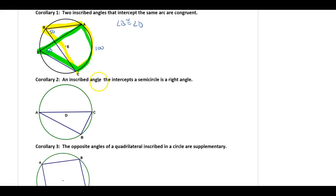Anytime an inscribed angle intercepts a semicircle, meaning the endpoints of this inscribed angle are on the diameter which cuts the circle in half, angle B equals 180 divided by 2, which is 90 degrees.